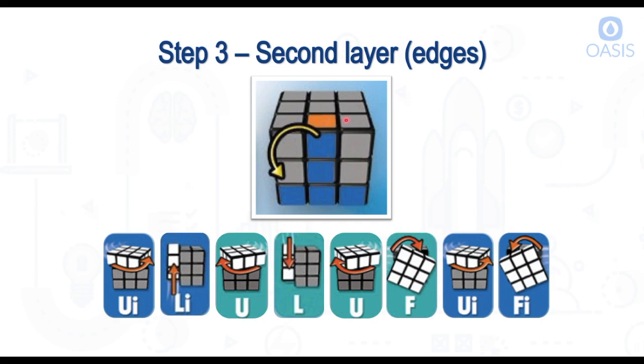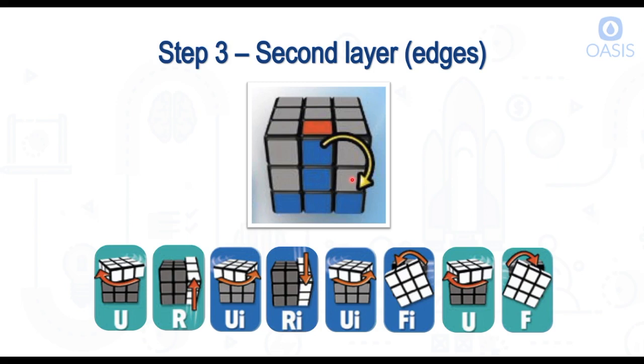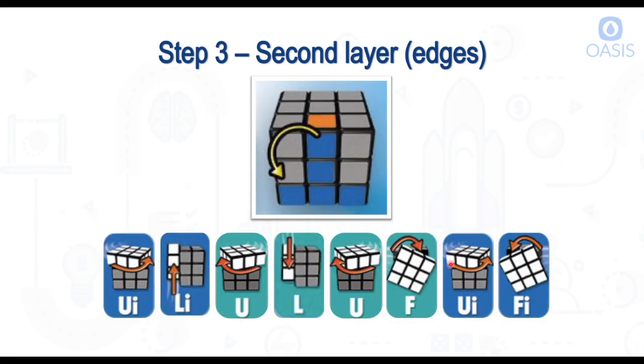What if the edge piece you need is already positioned here instead of on the top layer? Simply do one of the algorithms. If it's positioned here, do this algorithm to move it to the top layer, then you can reposition it and do the same algorithm again to bring it back down. Same thing here - if the piece you want to move is here, do this algorithm. It'll pop it back to the top layer, then you reposition it and do the algorithm again to put it back down. That's what's so great about these two algorithms - they're super useful in both cases. You only really have to remember two algorithms to solve the entire second layer.